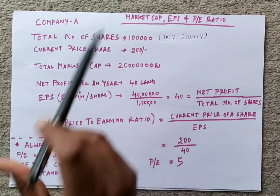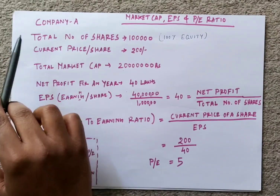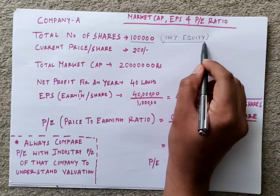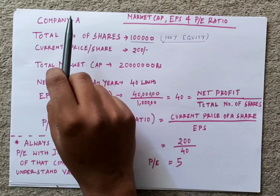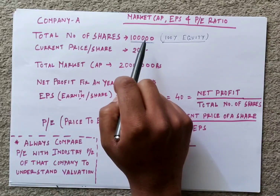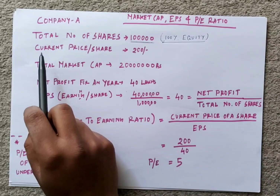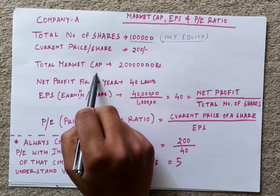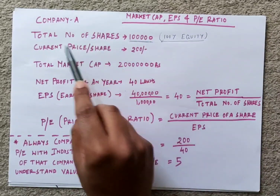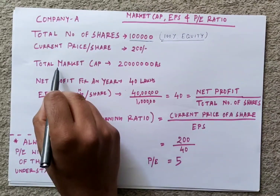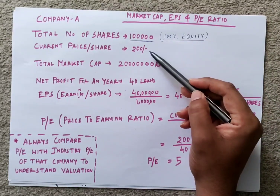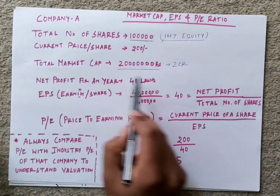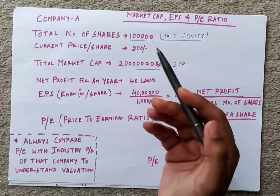Let's assume that today a company has a total of one lakh shares, which is 100% equity. This company, named A, has one lakh shares. If the current price per share is 200 rupees, then the total market cap will be total number of shares multiplied by the current price — that is one lakh into 200, which equals two crore rupees.